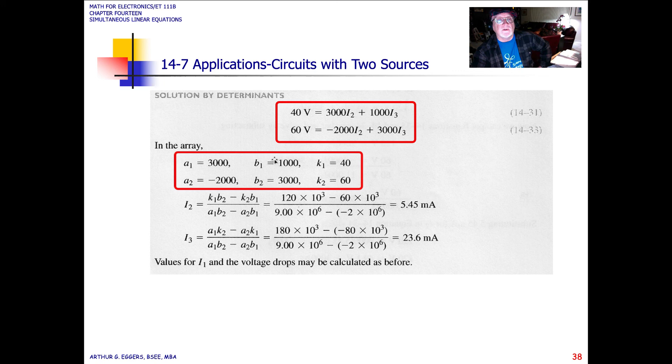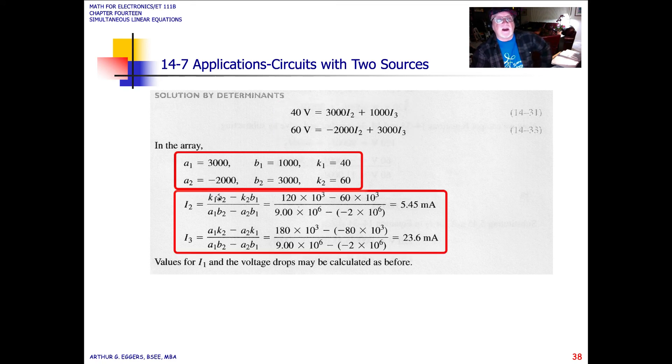So A1 and A2, B1 and B2, K1 and K2. We rearrange them into the matrix so that we have our determinant form here: K1 B minus K2 B, A1, B2, A2, B1, then become our expansion values. They didn't show the step here where we had the determinant. We do the expansion, and we end up with an I2 of 5.45 milliamps, just like we saw in the previous.